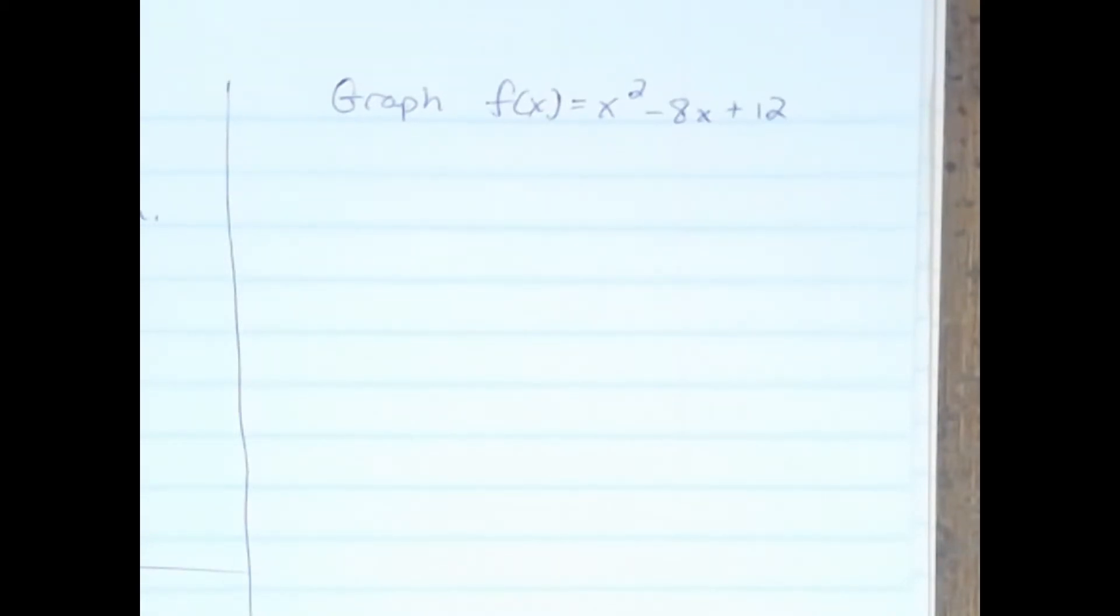Here we're going to graph the function f(x) = x² - 8x + 12, and we will use the vertex to help us create that.